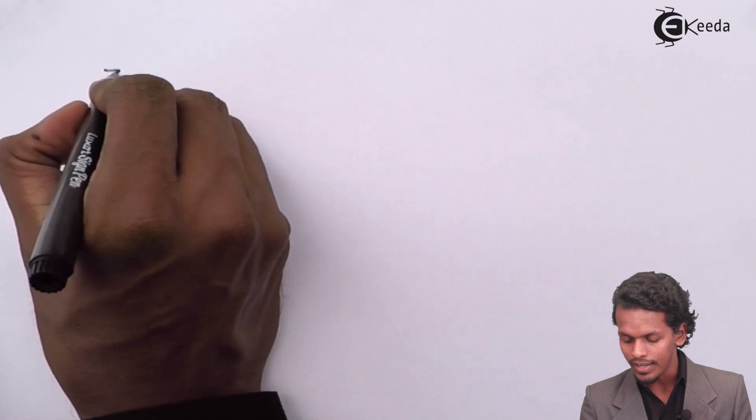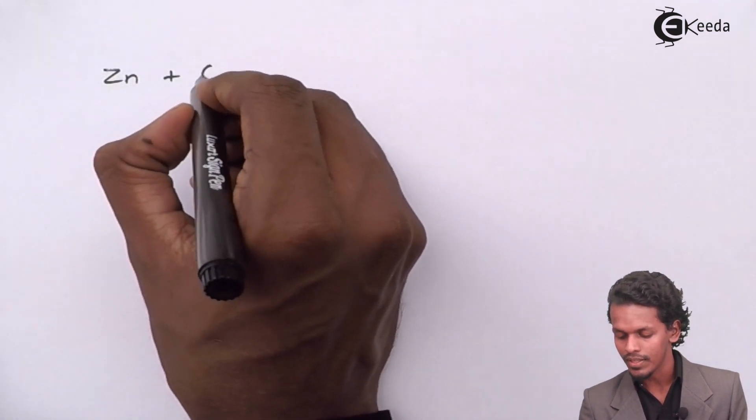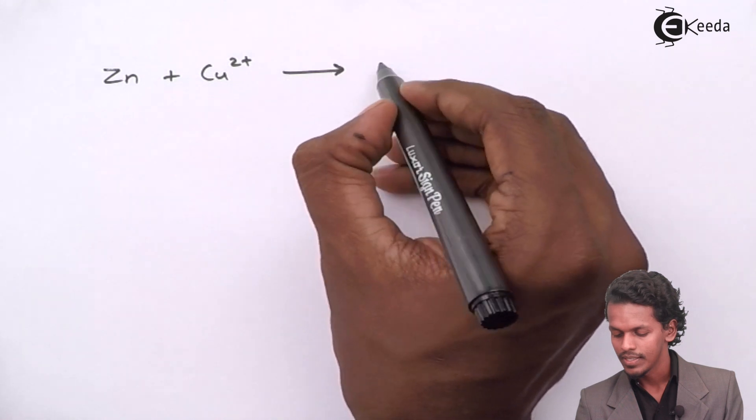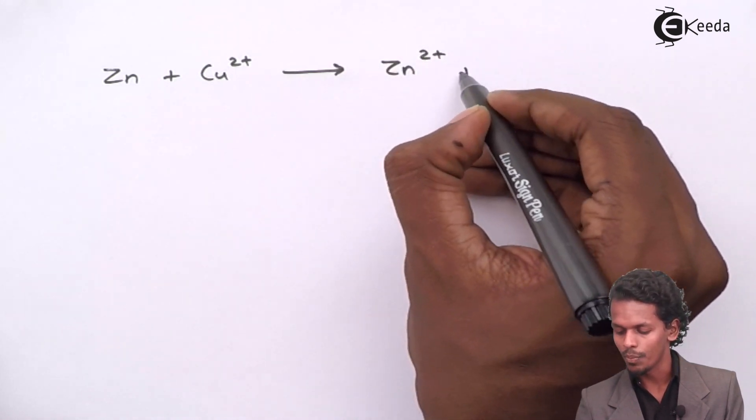When zinc is involved with copper 2+ ion to give zinc ion and copper, if I observe, zinc is converted into Zn2+.